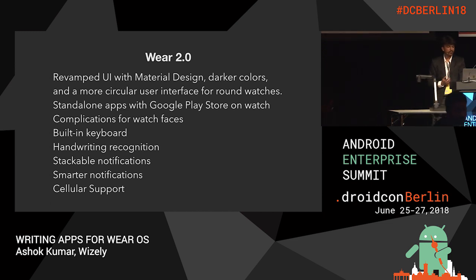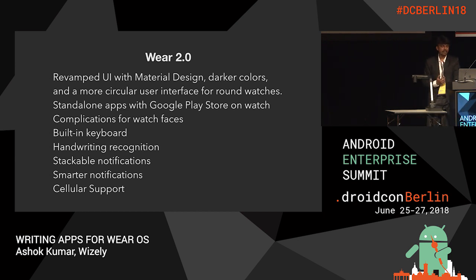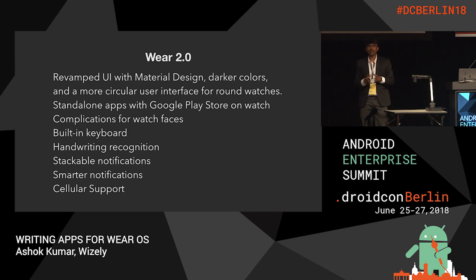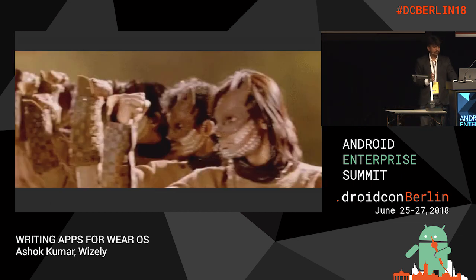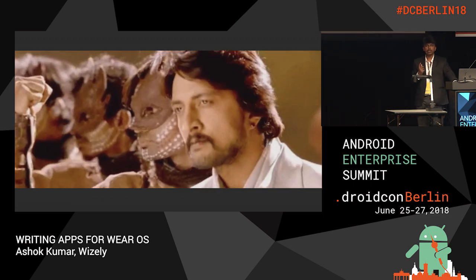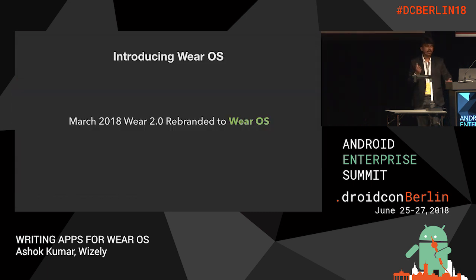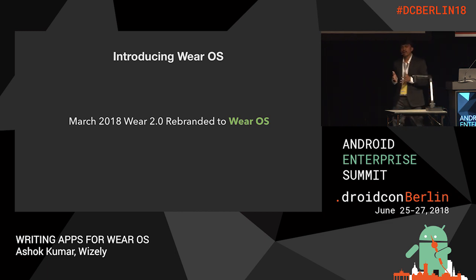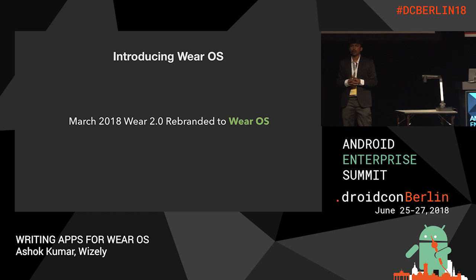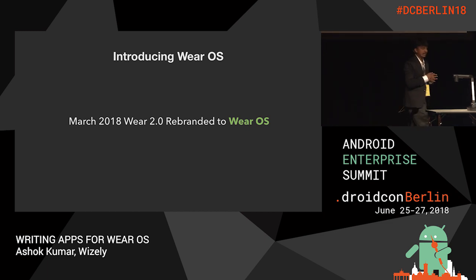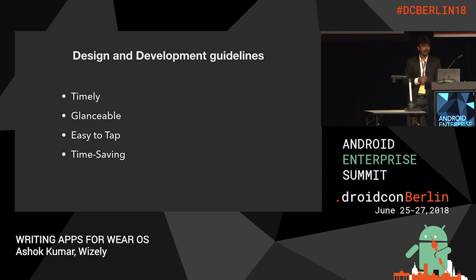Wear 2.0 also added a built-in keyboard, handwriting recognition, stackable notifications, and smarter notifications. Some dial manufacturers also include a radio, meaning a built-in SIM. Google then unified the name to Wear OS, upgrading from Wear 2.0 and rebranding it this March.